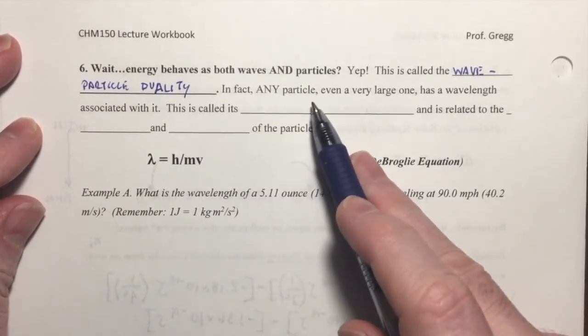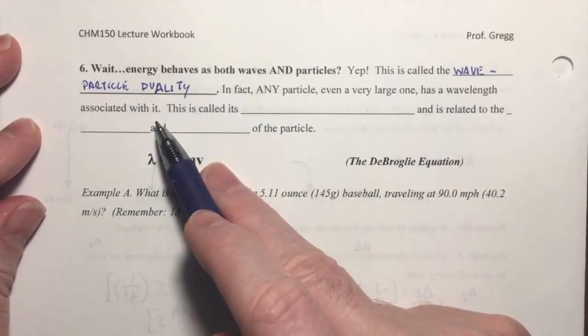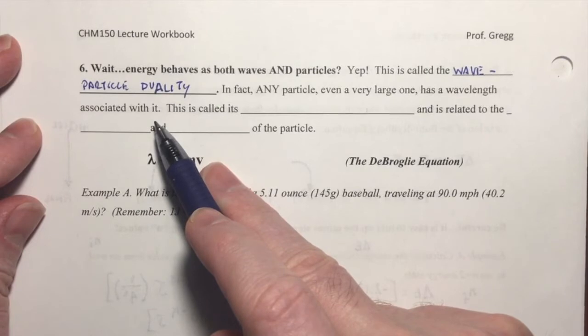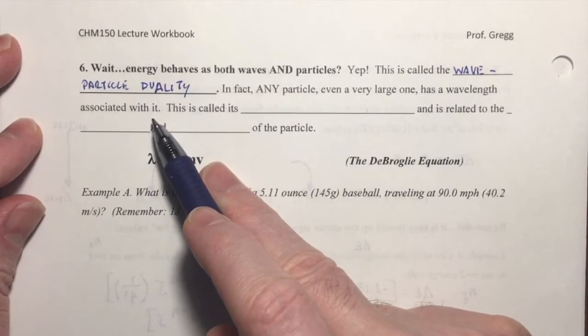So in fact, any particle, even a very large one, has a wavelength associated with it. A planet does. A baseball does. You and I do. We have our own wavelengths. But for very large objects like you and I and baseballs and things that we can actually encounter on the macroscopic scale, the wavelengths are very, very small. They're insignificantly small. And so we don't encounter macroscopic objects as if they were waves.